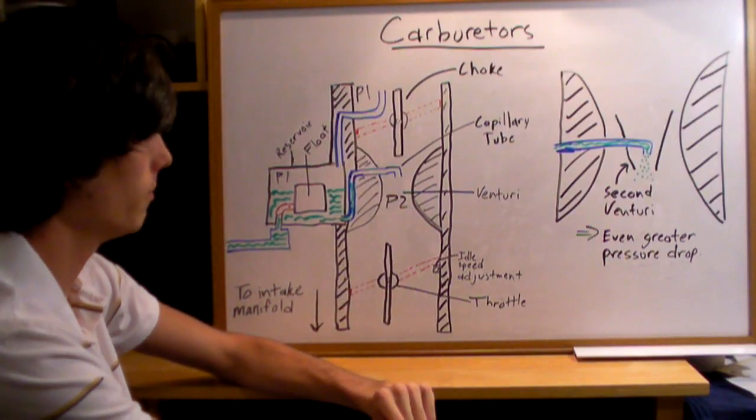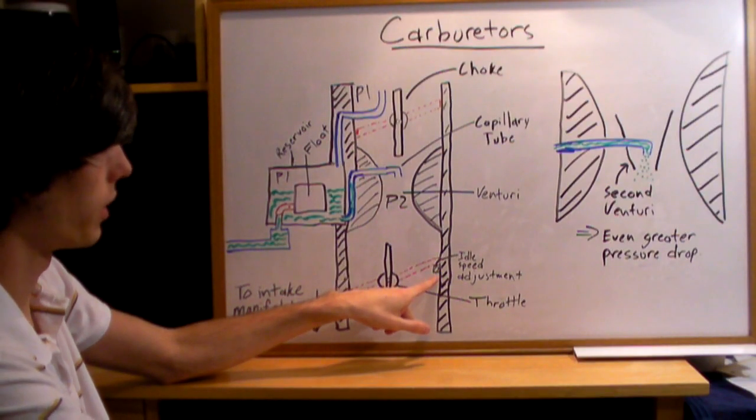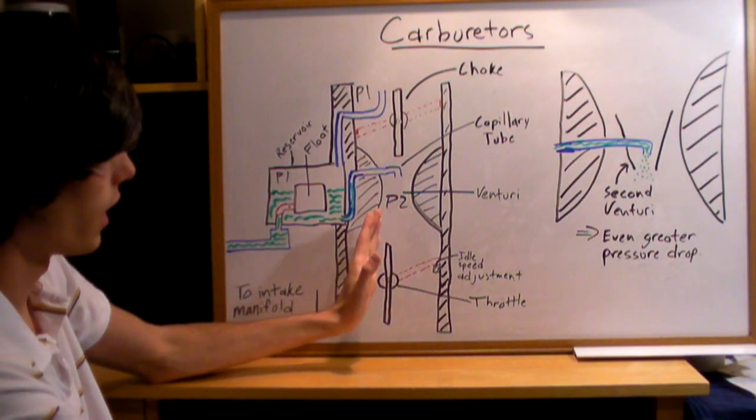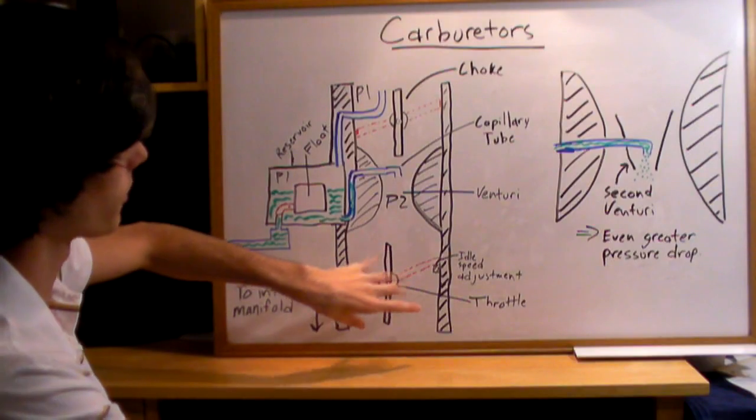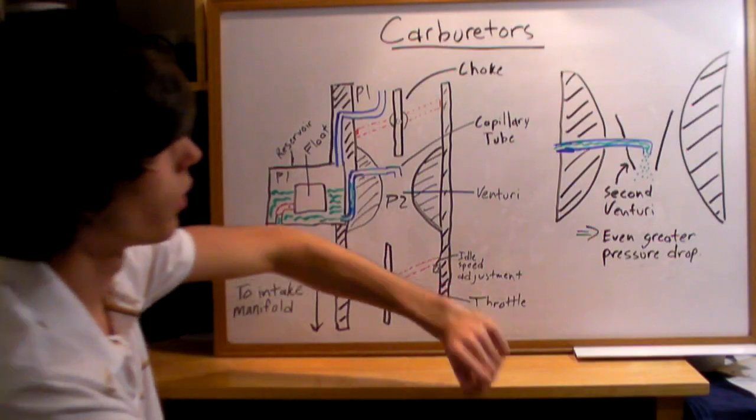Then you have an idle speed adjustment, so that when you're not on the gas and this throttle plate closes, it leaves a little gap so that air can flow past.